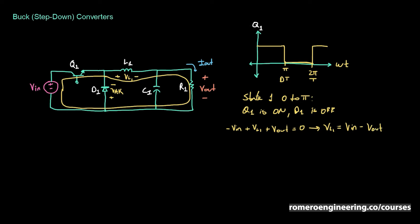When we switch Q1 off — this is State 2, from pi to 2pi, the remainder of the cycle — Q1 is off, so the input voltage is disconnected from the rest of the circuit. The loop for State 2 goes through D1, through V_out, and back to D1. D1 stays on because during State 1 we were storing energy in inductor L1, and once Q1 turns off that energy needs to flow somewhere — it flows through the freewheeling diode D1, forcing it to turn on. So for State 2, Q1 is off and diode D1 is on.